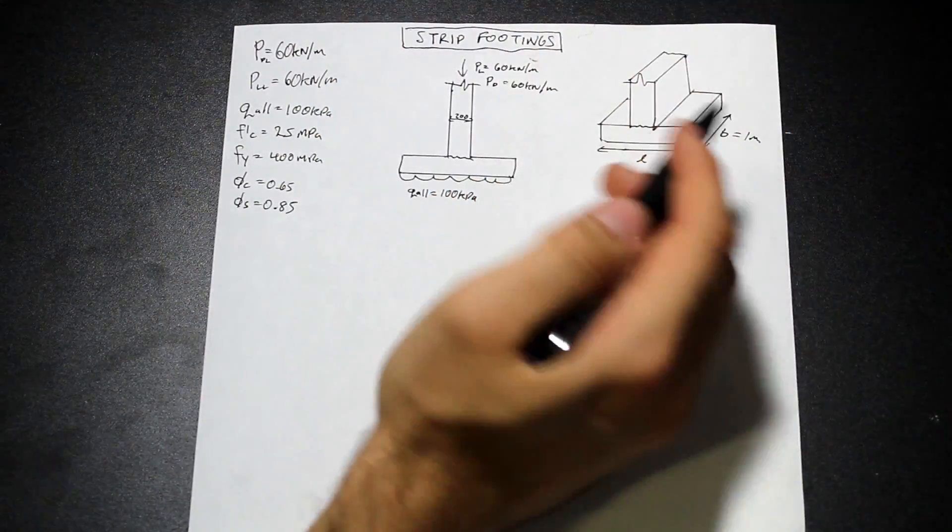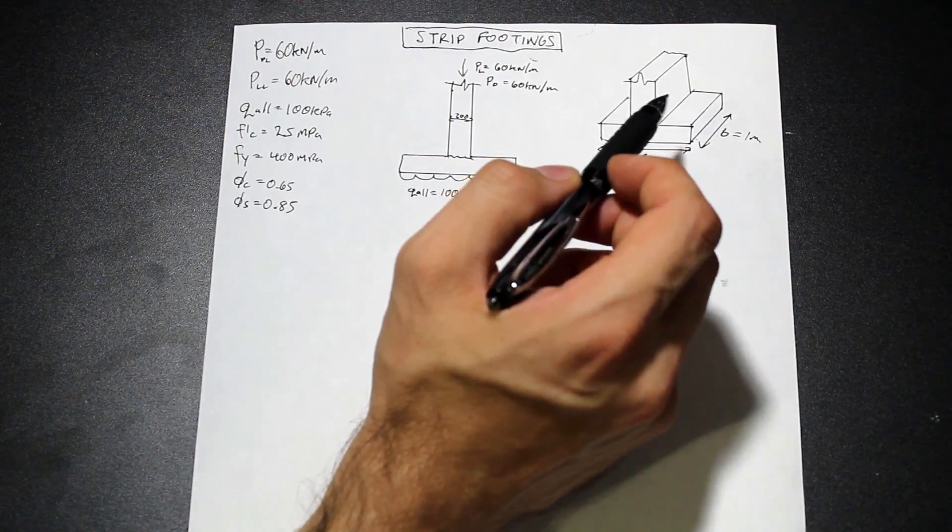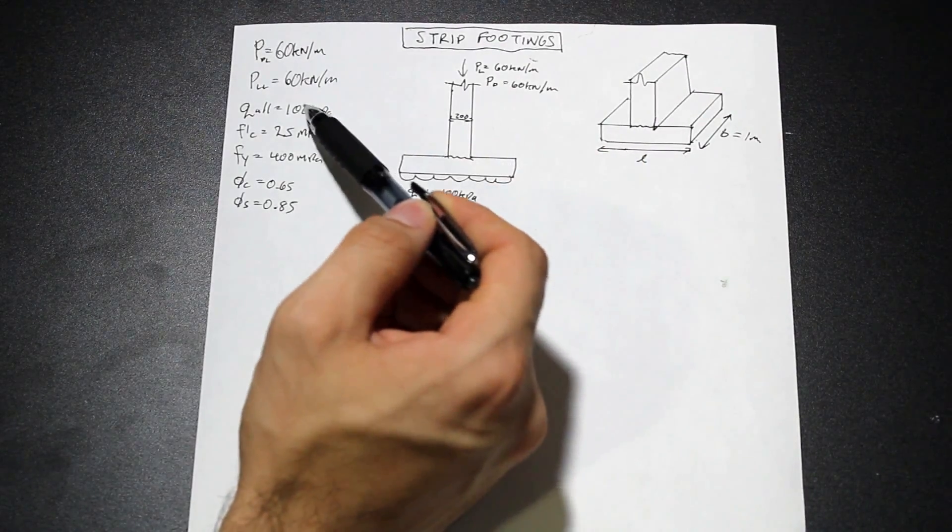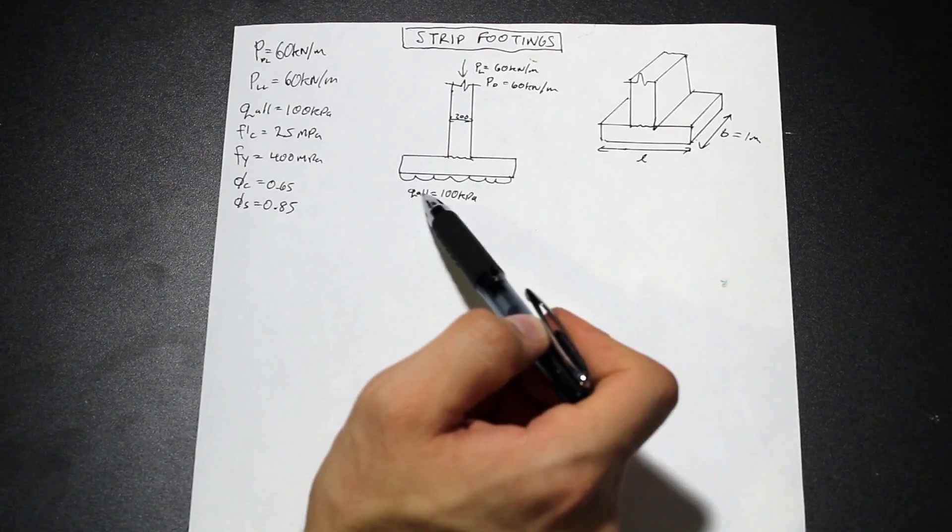We should know that by now. If you're unfamiliar with that, check my one-way slab video. We do explain that concept there. With that being said, we're going to design this one way. We're given the loads. And we're also given the allowable soil bearing pressure. So we're calling it Q allowable here.